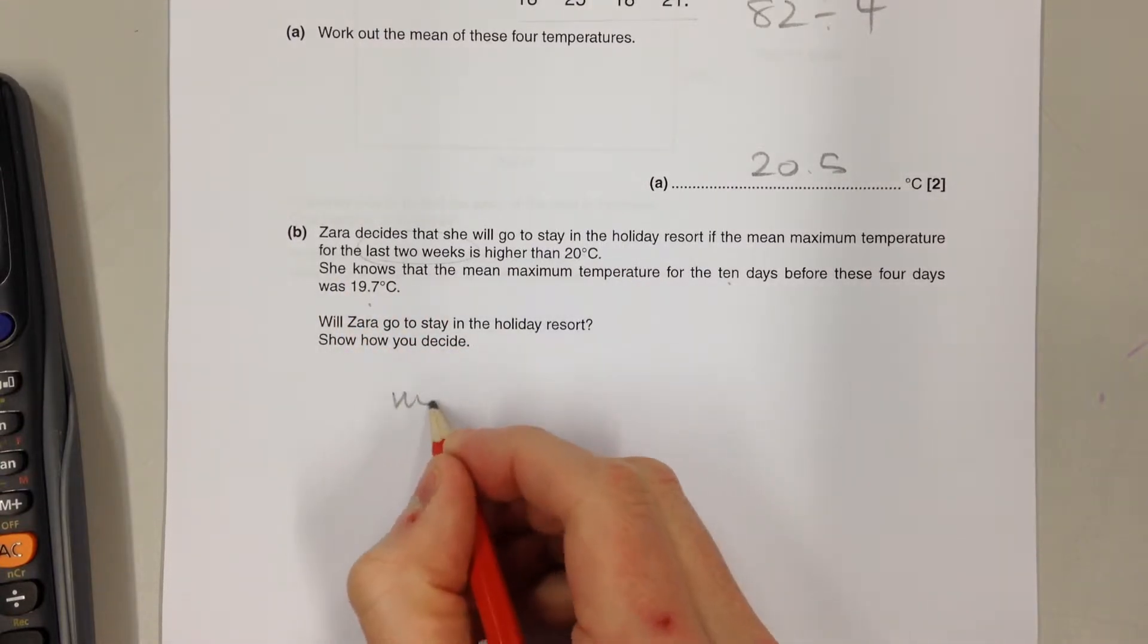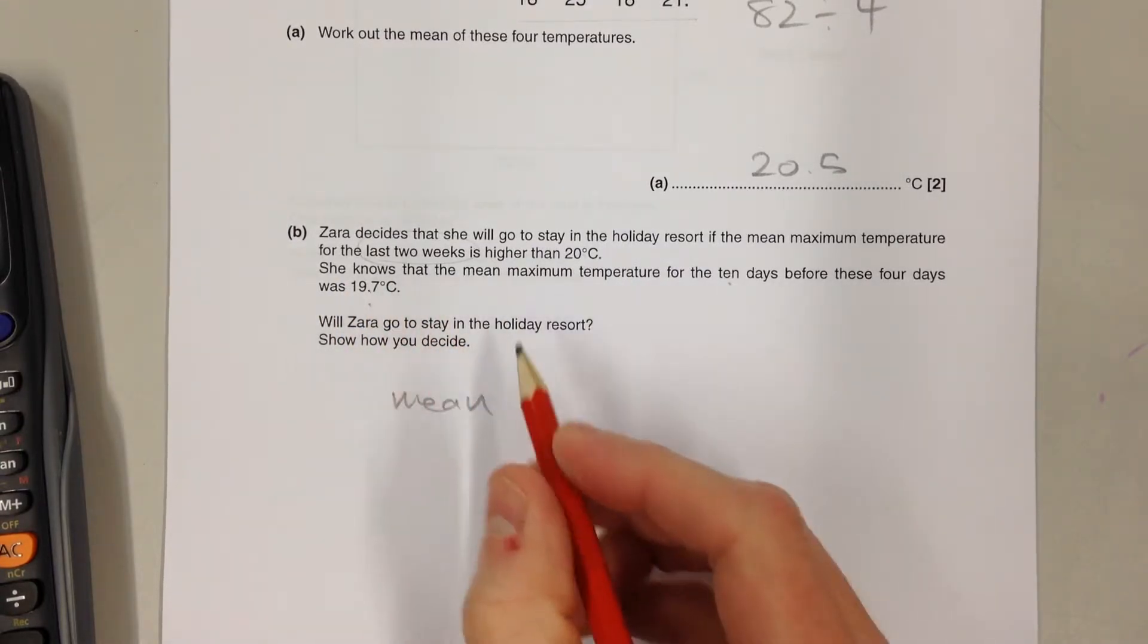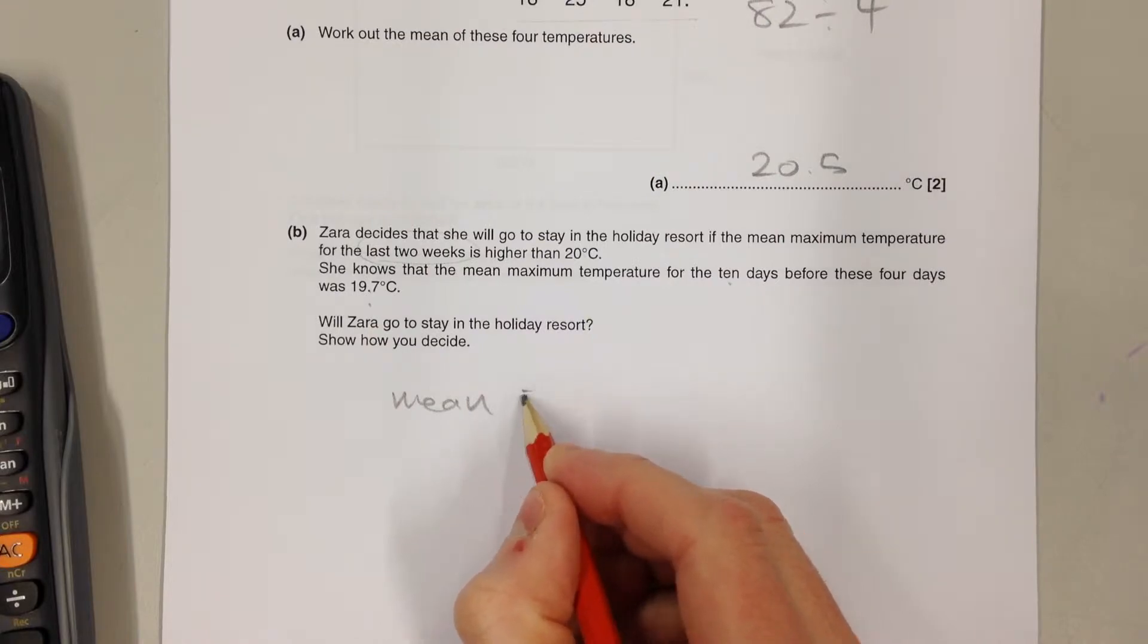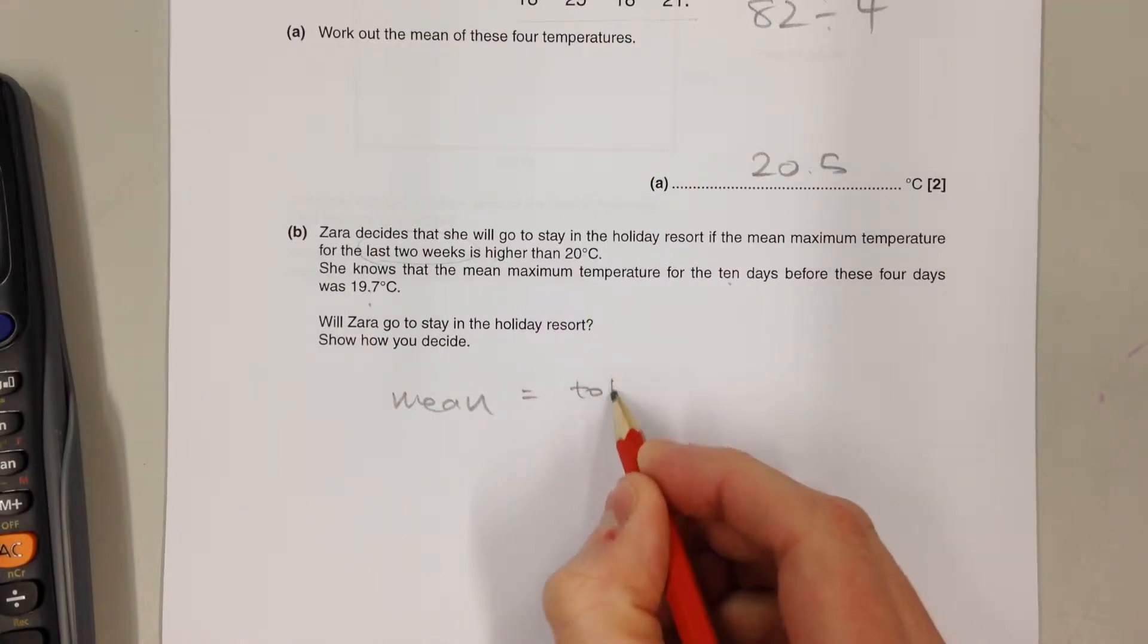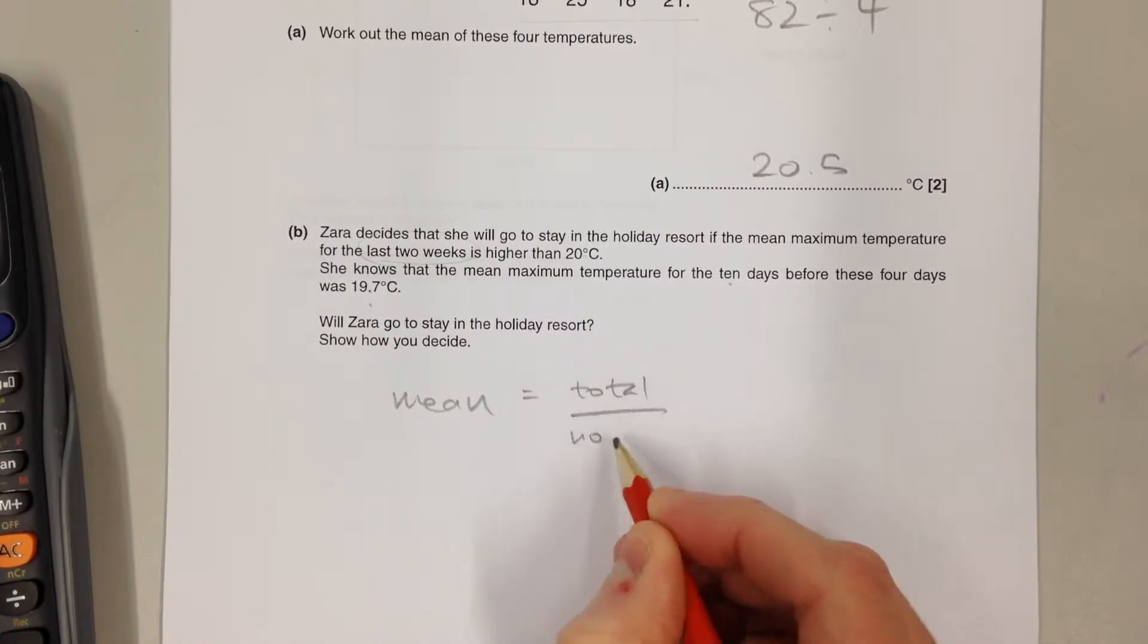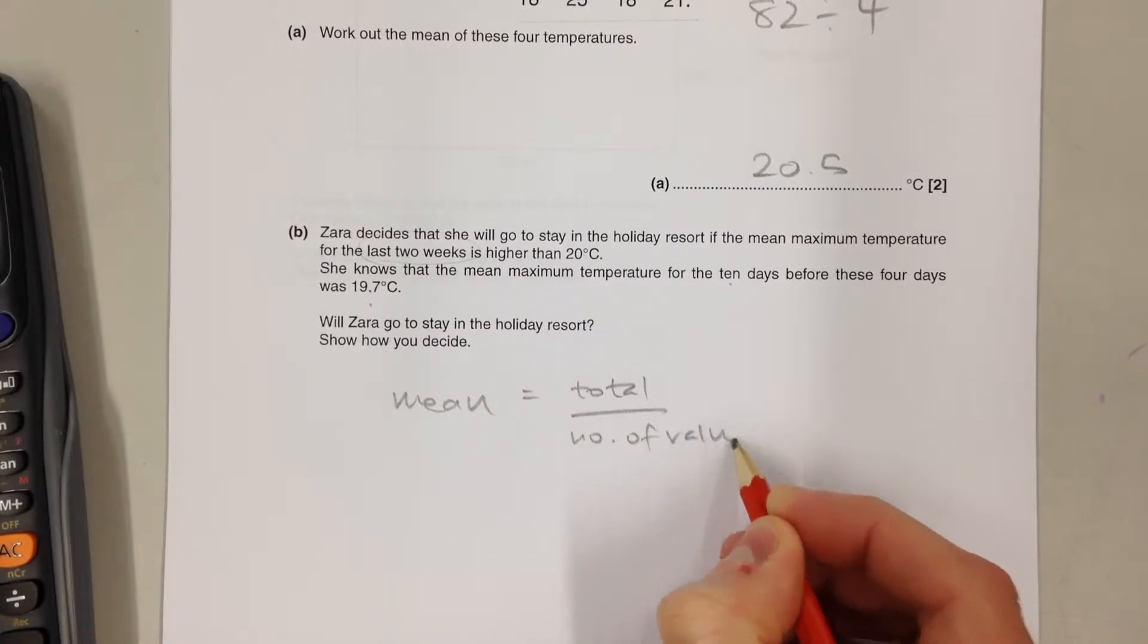However, we do know that the mean of these 10 is 19.7. Remember, the mean is the total divided by number of values.